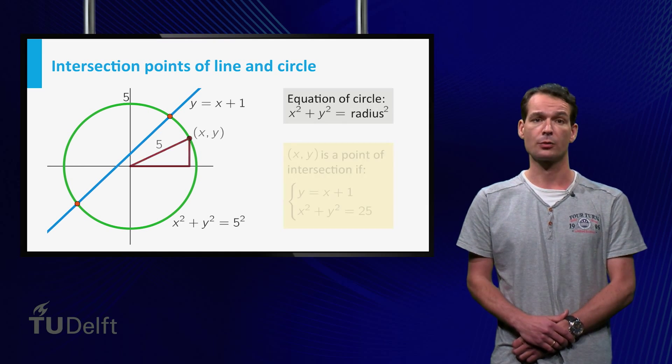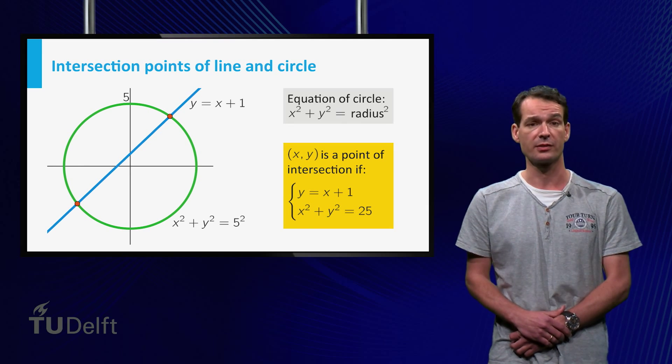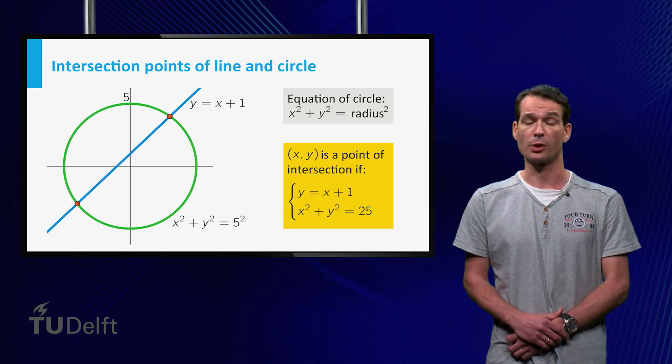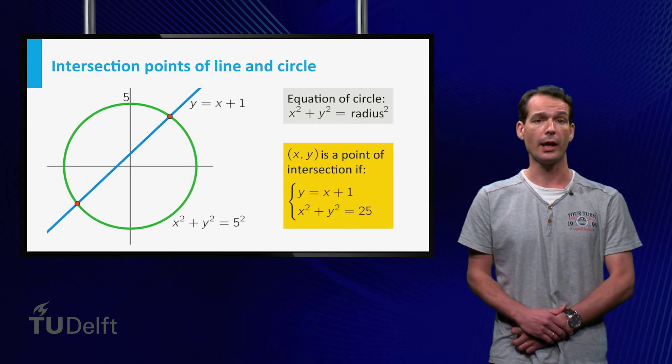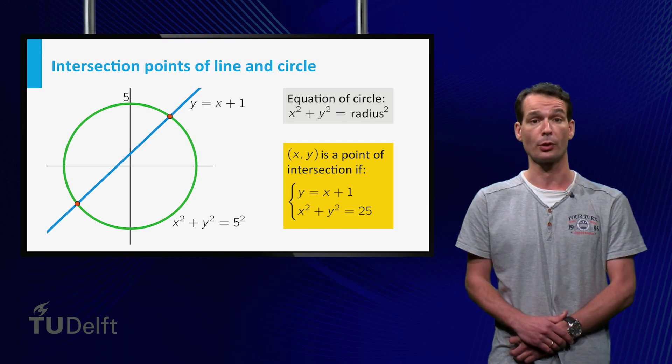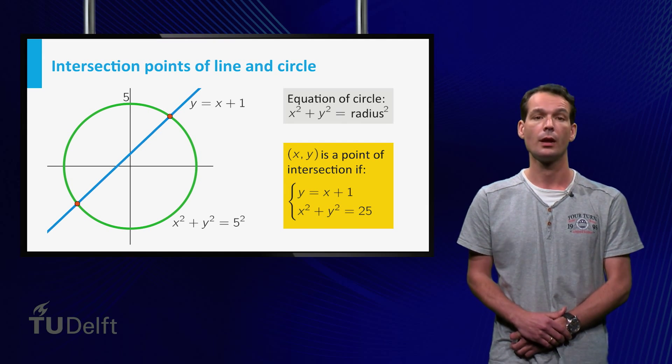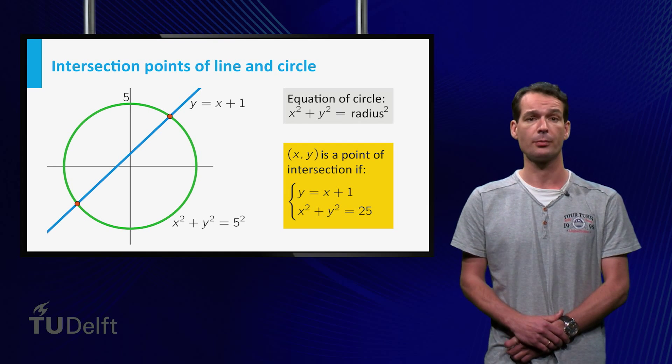So if x, y is an intersection point, then x and y satisfy the equations y equals x plus 1, that is x, y is a point on the line, and also x squared plus y squared equals 25, that is x, y is a point on the circle. We call such a set of equations in the same variables a system of equations.